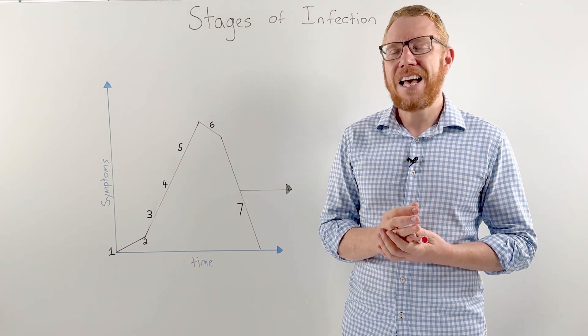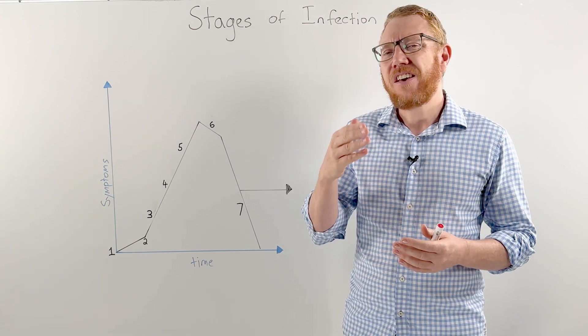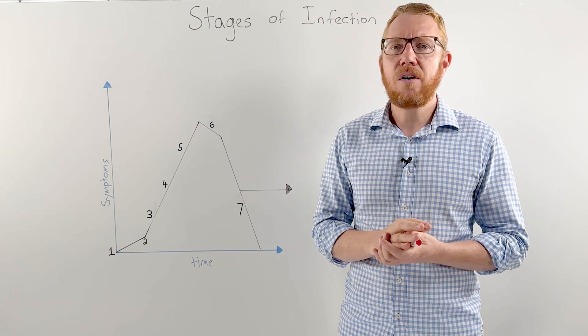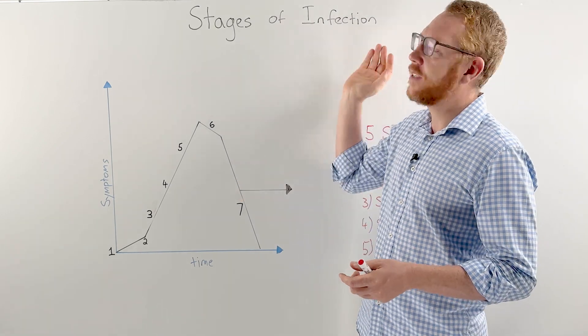This is what we call the stages of infection. This is where we get infected by a microorganism and it goes through its own stages of life cycle. Our immune system tries to attack it and it goes through what we call the stages of infection.